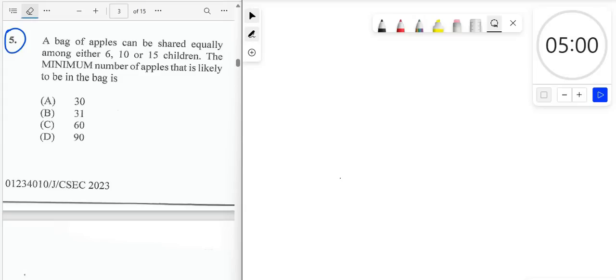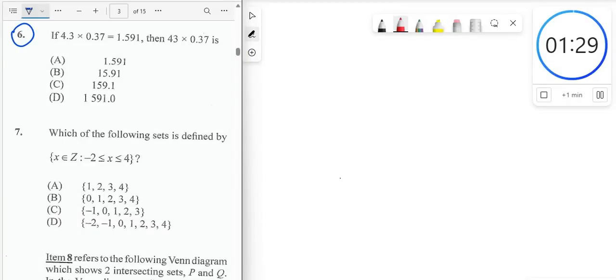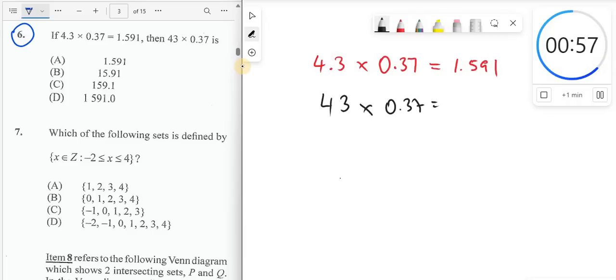So in other words, the LCM, the lowest common multiple of 6, 10, and 15, is 30. All right, so question number 6 is a really nice question. Very easy. If we look at what we're given here. Now, if you notice, the digits are the same. 4, 3, 4, 3, 0, 3, 7, 0, 3, 7. So our solution will have the same digits, really.